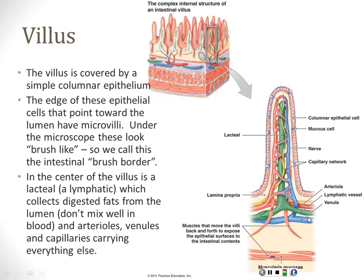Now we zoom into the villus. Down through the middle of each tuft of carpet is a large lymphatic that gets a special name called a lacteal. It's called a lacteal because what comes out of it looks like milk — absorbed fats, which are creamy and white. Then we have our artery and vein and a capillary bed in between.